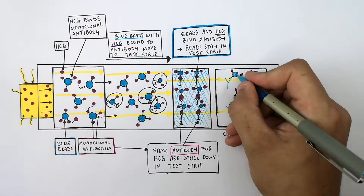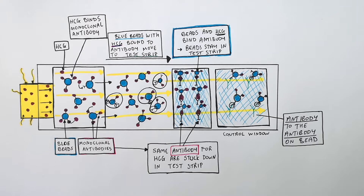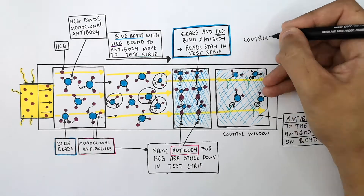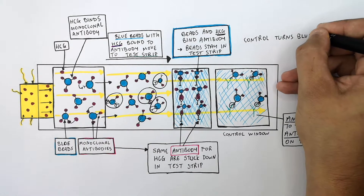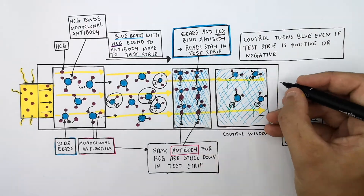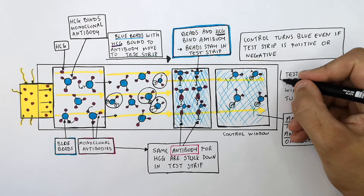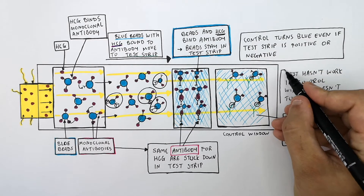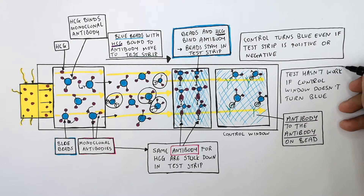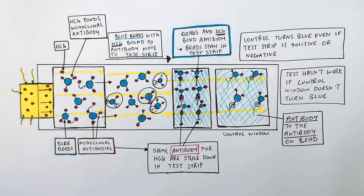This causes the control window to turn blue due to the blue beads remaining stationary. The control window turns blue whether the test strip result is positive or negative. If the control window doesn't turn blue, the test hasn't worked. If the test strip turned blue but the control window didn't, or if there are no lines present, you must take another test.